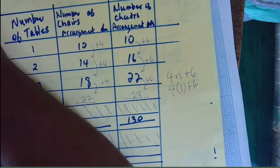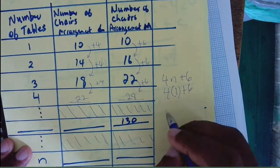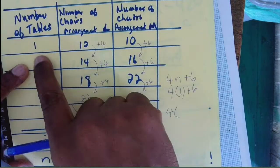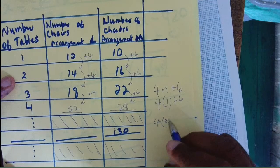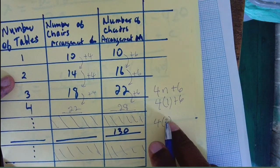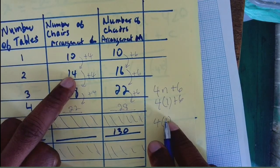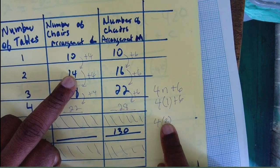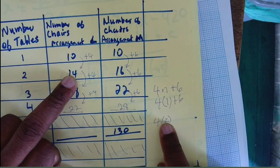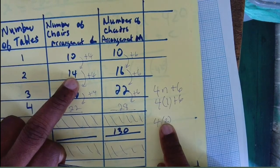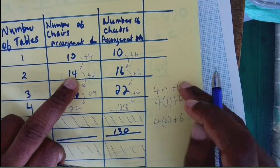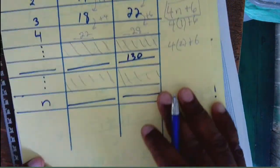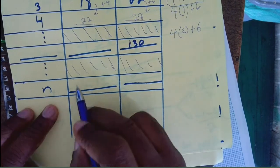Let's try with n = 2: 4 times 2 is 8, but we have 14. How much more do I need? 8 plus what gives 14? 4 times 2 is 8 — I need 6 more to get 14. The same 6 I have here.